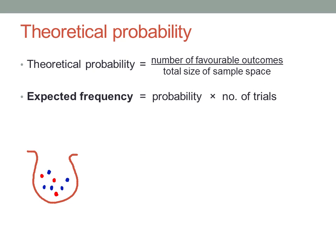And of course, you can use theoretical probability to predict the expected frequency of an event, in exactly the same way as with experimental probability. The expected frequency is the probability multiplied by the number of trials.